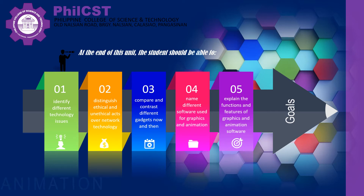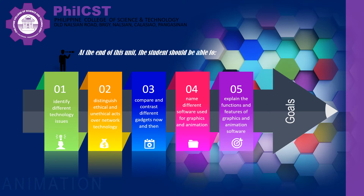Number 3, compare and contrast different gadgets now and then — the differences between gadgets today and before. Number 4, name different software used for graphics and animation — the ones used to make animations like what you watch on TV, the software and applications.